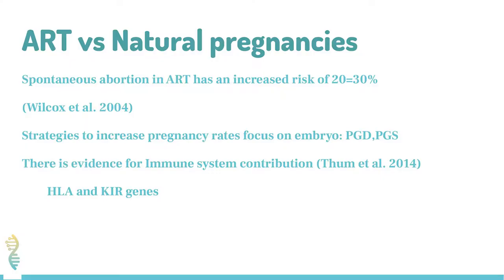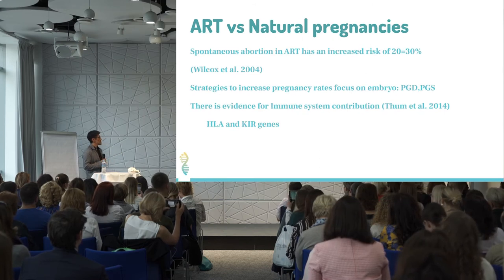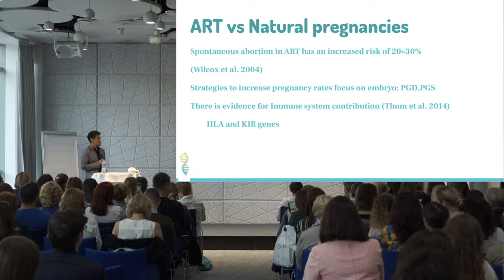We know that recurrent miscarriage is a problem. Spontaneous abortion has an increased rate in contrast to natural pregnancies of 20–30%. Currently, the main technology being used to prevent miscarriage is at the level of the embryo — for example, PGD or PGS.